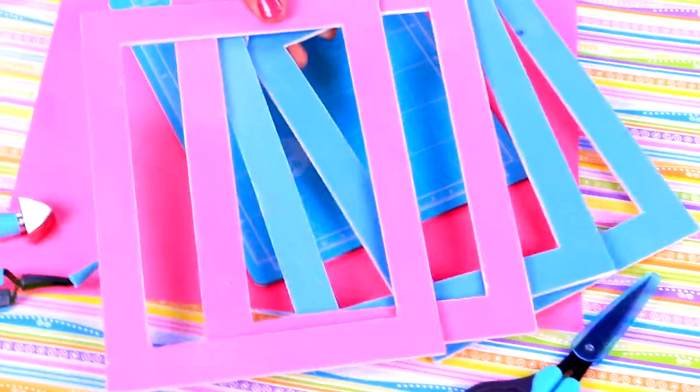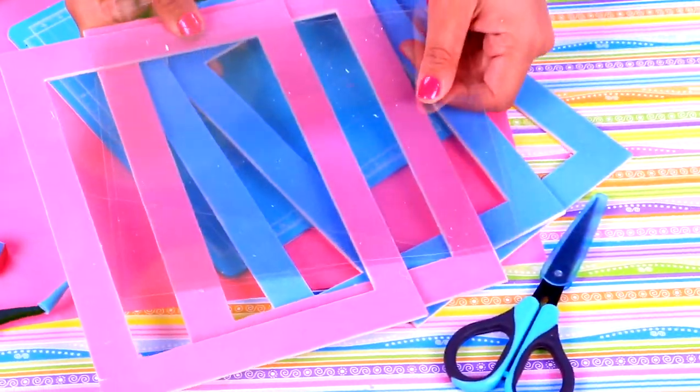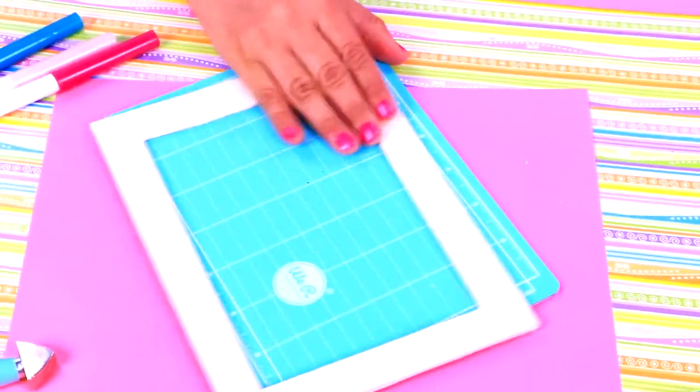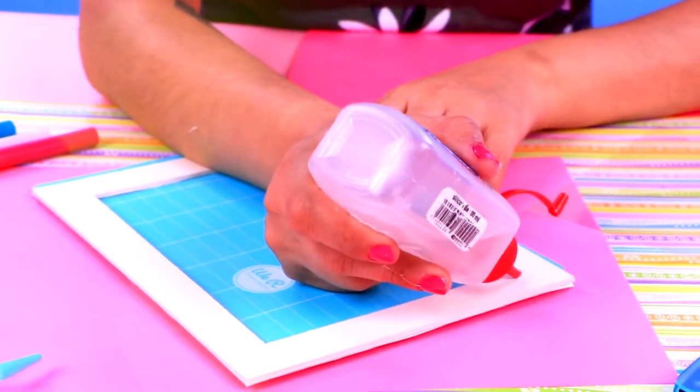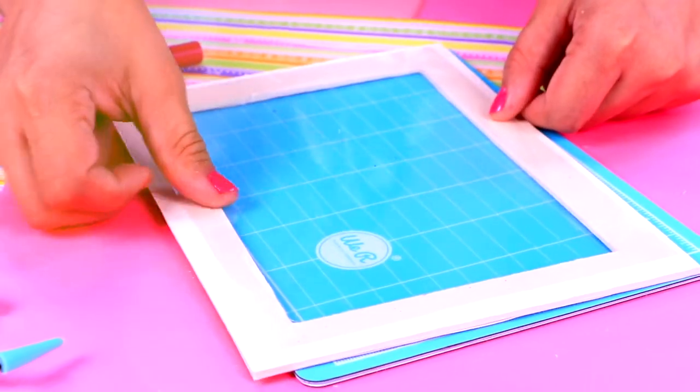Look, we have cute frames again! But they need some acetate, so now, we'll glue the transparent acetate on the back of our rectangles. Don't use too much glue so it doesn't drip and the table ends up messy. They are ready!